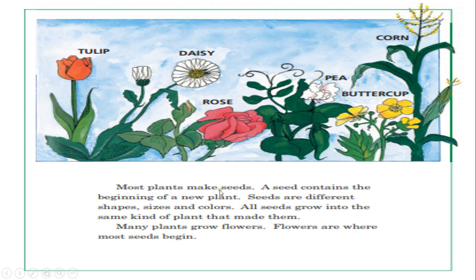Most plants make seeds. A seed contains the beginning of a new plant. Seeds are different shapes, sizes, and colors. All seeds grow into the same kind of plant that made them. So for example, if a tulip grew and had seeds that fell off and went into the ground and another plant grew, it will be another tulip — not a daisy. Every seed that comes from a plant will grow another plant of the same type.